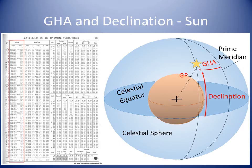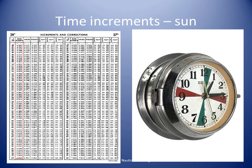The Nautical Almanac tells us the Greenwich Hour Angle (GHA) of the celestial bodies. GHA is the angle between the prime meridian and the meridian of the geographical position of the celestial body. Here we see the section of the Nautical Almanac showing GHA and declination of the Sun for every hour of three days. We have to interpolate between the hours to find the increments for minutes, and the Nautical Almanac contains a table at the back to help with finding the increments for minutes and seconds. In this slide we have highlighted the increments column for the Sun and planets.